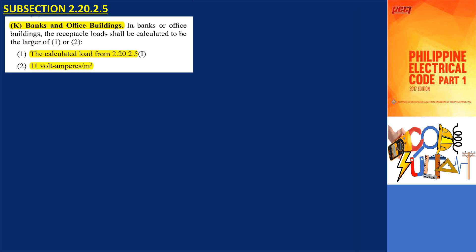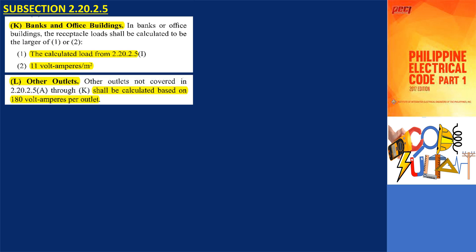Subsections 2.20.2.5k are for banks and office buildings. Receptacle outlets for these occupancies can be calculated at least 180 volt amperes as specified in subsection 2.20.2.5i, or by 11 volt amperes per square meter. Subsection 2.20.2.5l covers other outlets not addressed in 2.20.2.5a through k, which shall be calculated based on 180 volt amperes per outlet.